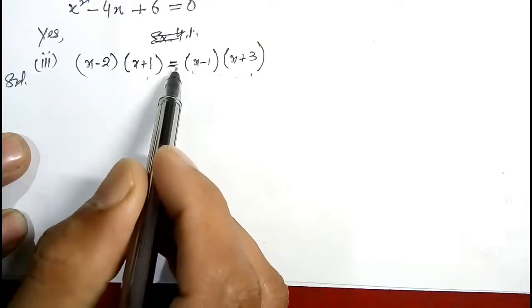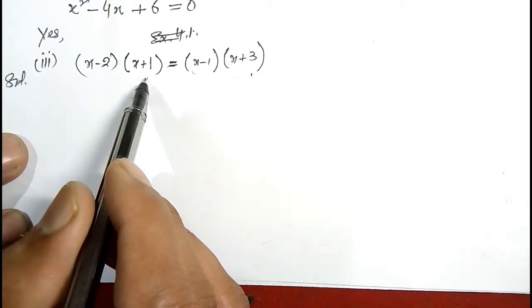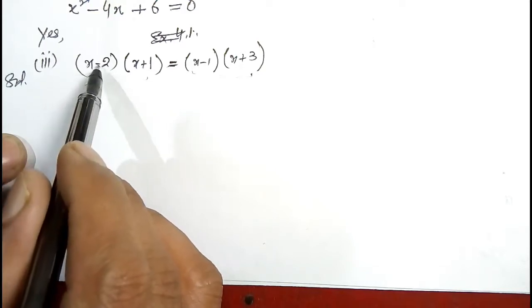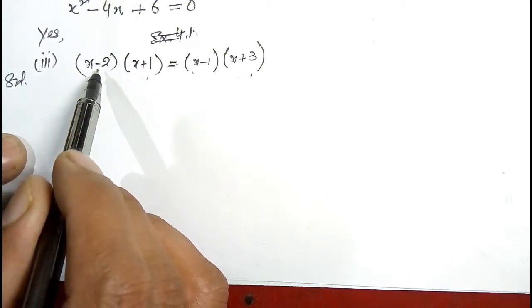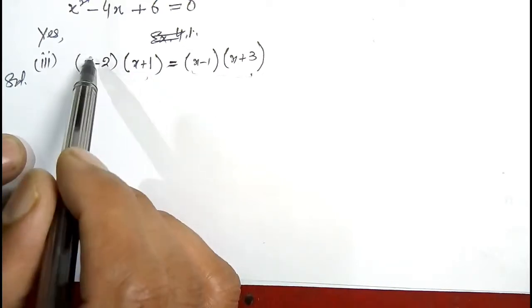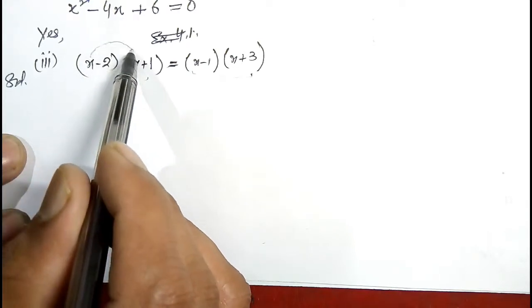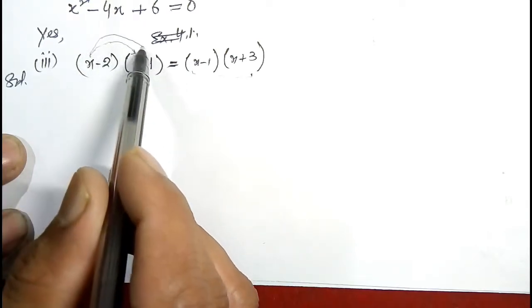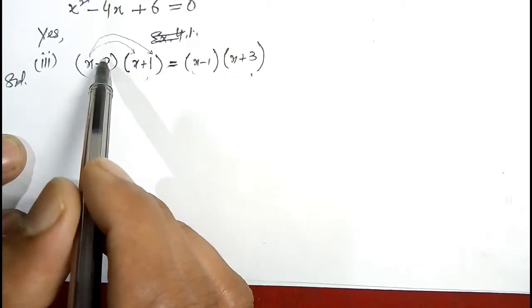Now I will first multiply the two expressions on the left hand side, that is (x minus 2) and (x plus 1). I will multiply these two: first x with x, then x with 1, and then I will multiply minus 2 by each term.